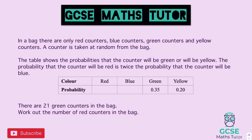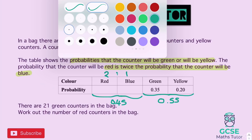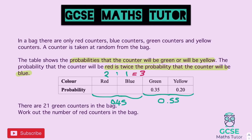Pause and have a go at the final question. The table gives probabilities for green and yellow, and states that the probability of red is twice the probability of blue — so red to blue is 2:1. The known values total 0.55, leaving 0.45. Splitting 0.45 in the ratio 2:1 (3 parts total): 0.45 ÷ 3 = 0.15 per part. So blue = 0.15 and red = 0.30.